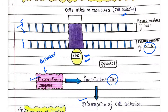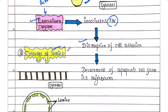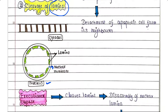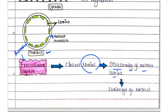The next target of executioner caspase is lamins. Lamins are proteins found in the nuclear membrane. Here we can see the nucleus and the nuclear membrane, where lamins are associated. These proteins are required to keep the nuclear membrane intact. When executioner caspase is activated, it cleaves lamins, causing disassembly of the nuclear lamina and shrinkage of the nucleus, which is very dangerous for the cell.